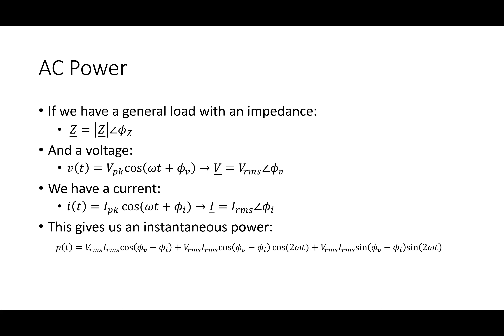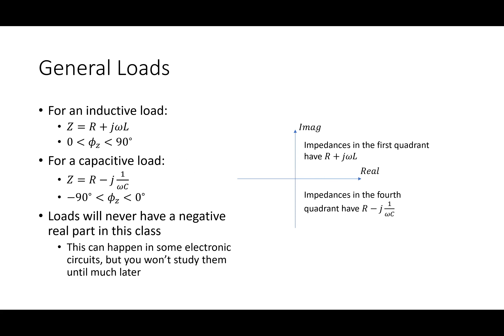We talked about instantaneous power. We don't really use it much, but we defined P and Q from it. Basically, when we look at our load — if I have an inductive load, the angle of the impedance is always positive. What does that mean about the current and voltage? Current will be lagging if I have an inductive load.